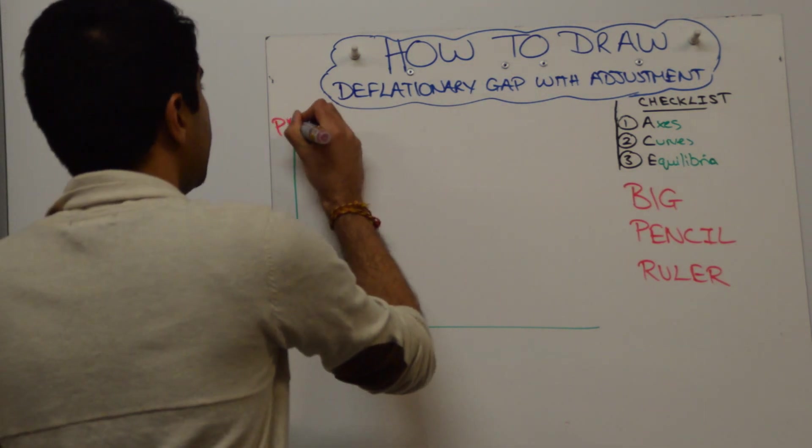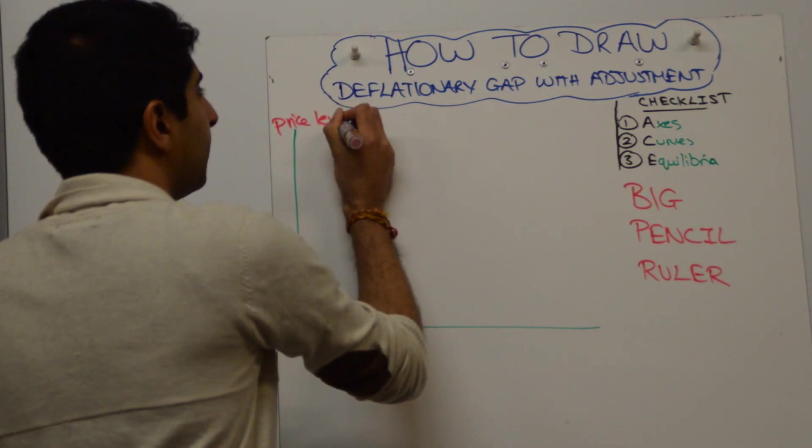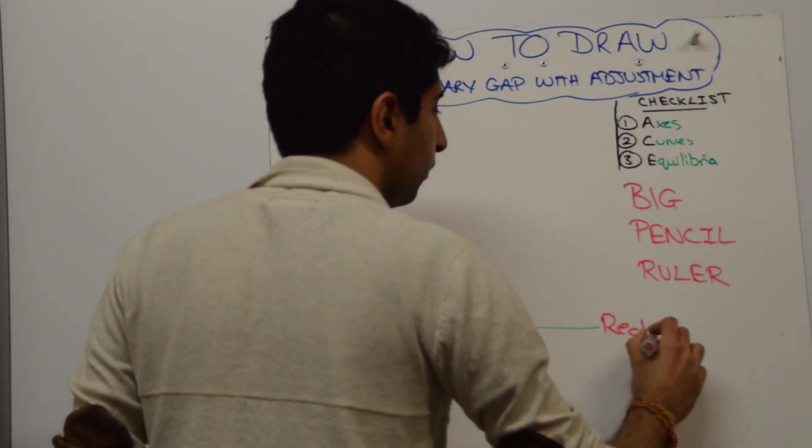We start by labeling the axis. So on the y-axis label price level, on the x-axis label real GDP.